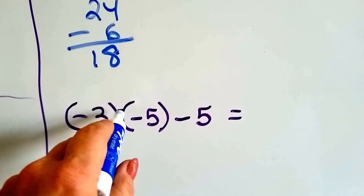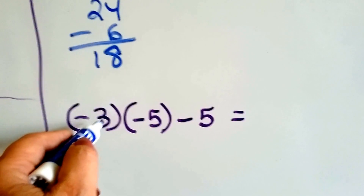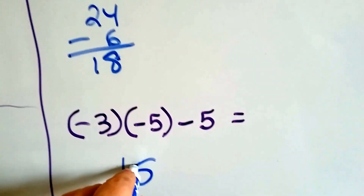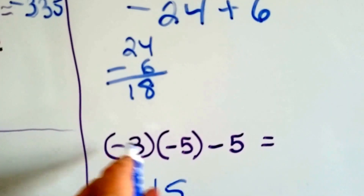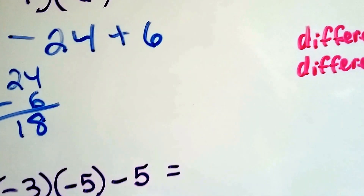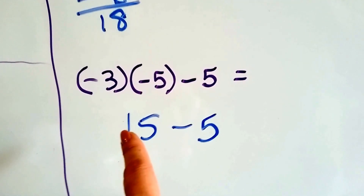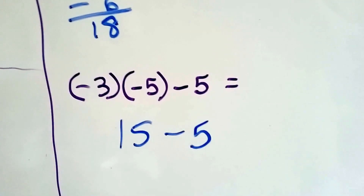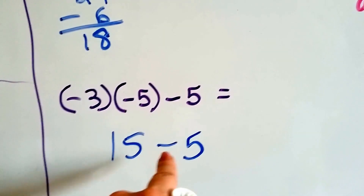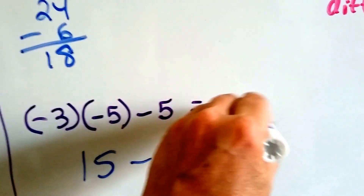Now we have negative 3 times negative 5. We multiply their absolute values — just the 3 and just the 5 — we get 15. They have the same sign, and when the signs are the same, it's positive. So we know this is positive 15, and we're going to take away 5. Because these are both positive — this is just the subtraction sign — so they're both positive. It comes out as 10.